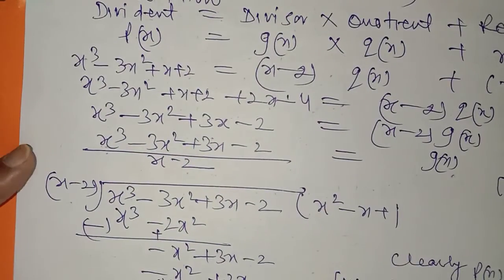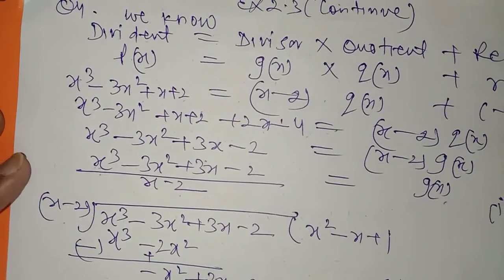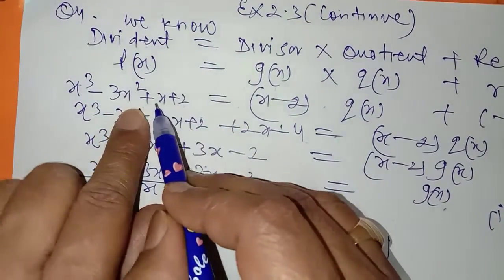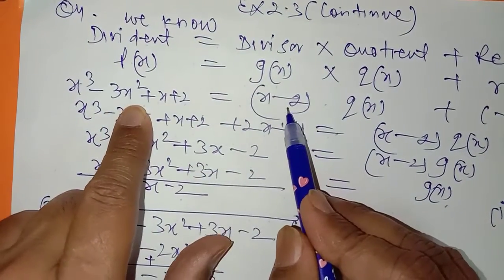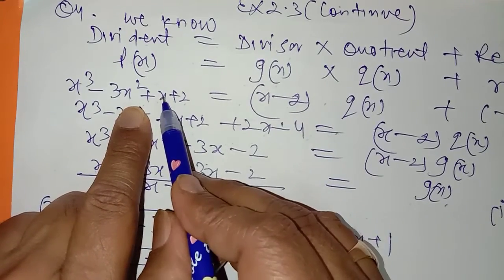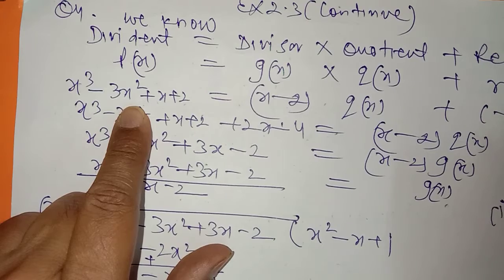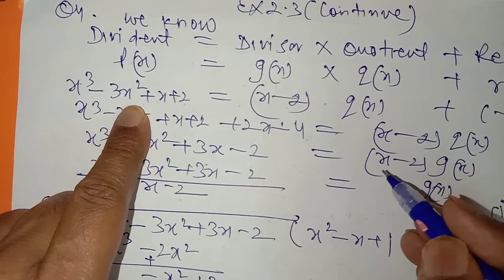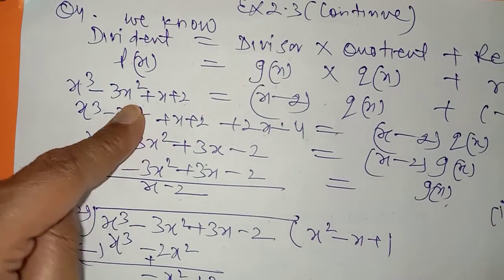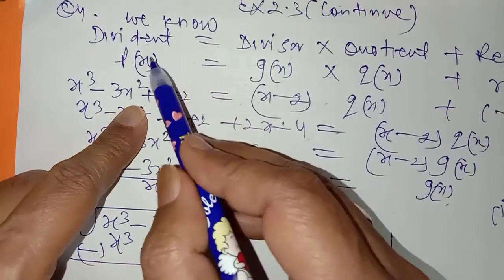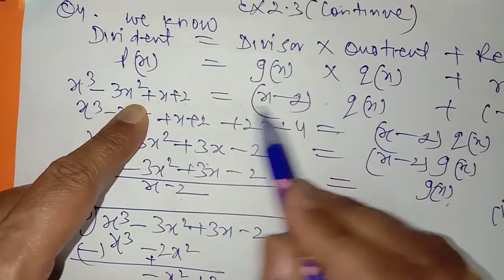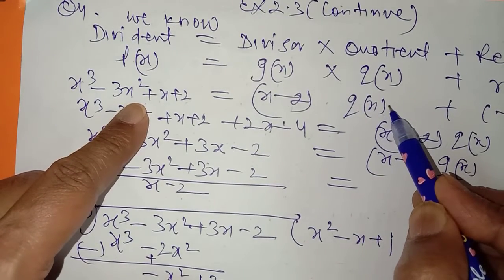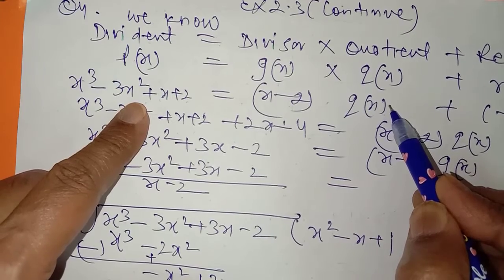Now question number 4 of exercise 2.3 — somewhat easy question. It is given that when a polynomial is divided by x minus 2, the remainder is this, and you have to find by which polynomial it should be divided — یعنی quotient qx پتہ کرنا ہے۔ Divisor دے رکھا ہے، remainder دے رکھا ہے، quotient پتہ کرنا ہے۔